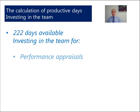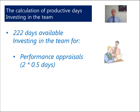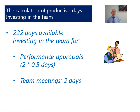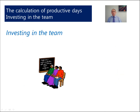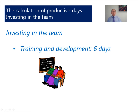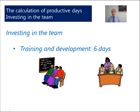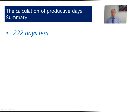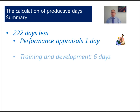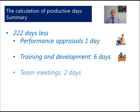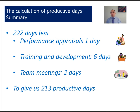Now, we do invest in our team. We will want to sit with them and give them a performance appraisal — every 6 months, we sit down for half a day and look at how well the individual is performing. It is also important to bring the team together for team meetings, and in this example we will assume one every 6 months. As we work in a knowledge economy, we need to train our team, so we will put down 6 days worth of training each year. To summarise: we had 222 days, took off 1 day for performance appraisals, allowed 6 days for training, and had 2 team meetings each year each of 1 day. That leaves us a balance of 213 productive days.